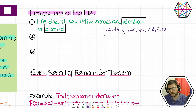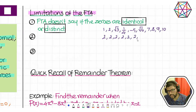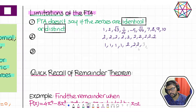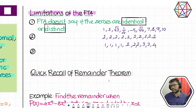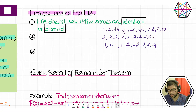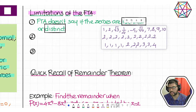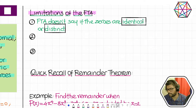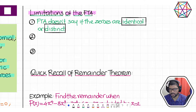FTA says, for example, if you have a polynomial of degree 10, there are 10 zeros. But you don't know if all those 10 numbers are different or the same — it could be 2 repeated 10 times, or a mixture like 1, 1, 1, 2, 2, 2, 2, 3, 3, 4. So that is the first drawback of FTA: we do not know how many distinct zeros there are.